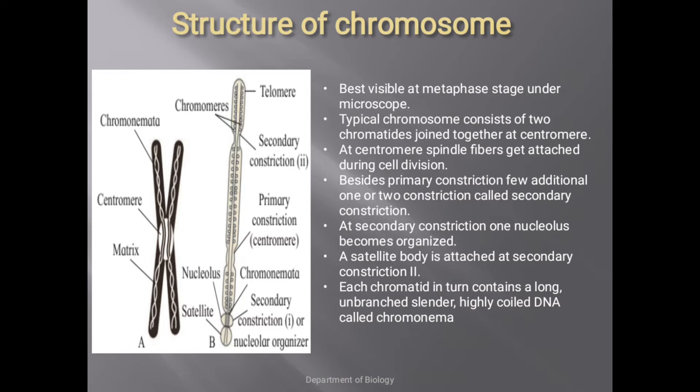Centromere is also known as primary constriction. At the centromere, chromosomes are attached with spindle fibers during cell division. Beside the primary constriction, a few additional constrictions are present called secondary constrictions. Some secondary constrictions are also known as nuclear organizers because they help in the formation of the nucleolus.